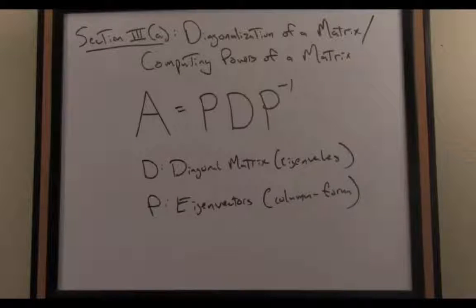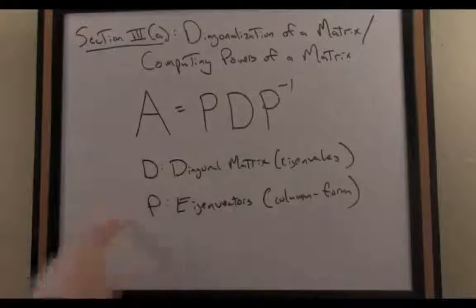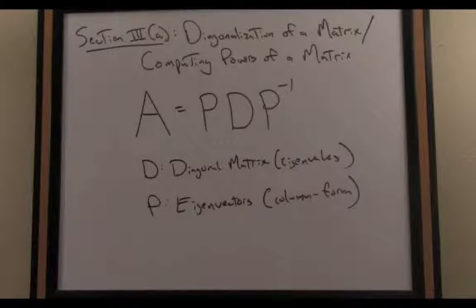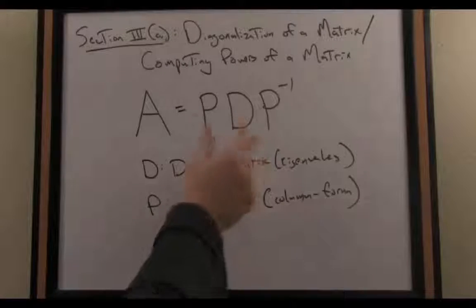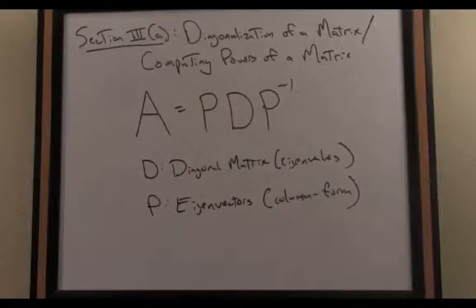If possible, we'd like to, given a matrix A, diagonalize it, meaning write it in this particular factored form. I use the caveat if possible for the reason that not every matrix can be written in this particular factored form. It's not possible to diagonalize every single matrix. What we need to be able to diagonalize a matrix is essentially we need enough eigenvectors to fill in the matrix P.